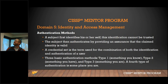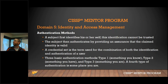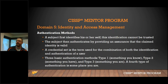Authentication methods: identification is when a subject identifies themselves — 'I'm Brad' — but that can't be trusted on its own. Authentication provides assurance that the claimed identity is valid. The three basic authentication types are: Type 1 — something you know (passwords); Type 2 — something you have (key card, RSA token, Duo); Type 3 — something you are (biometrics). A fourth type is someplace you are, like geolocation.